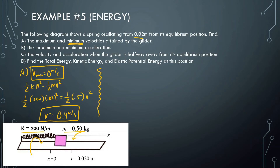Some people might argue the minimum velocity is negative 0.4 meters per second, but negative just implies a direction. Part B: the maximum and minimum acceleration. The minimum acceleration is when the object is at the equilibrium position. Even though it's going the fastest there, the spring is not stretched or compressed, so there is no force and therefore no acceleration. So the minimum acceleration is 0 at the equilibrium position.